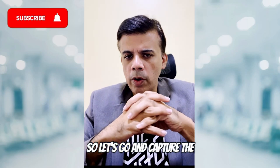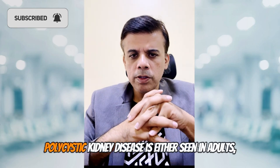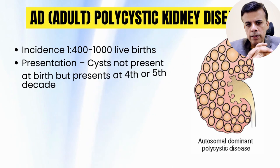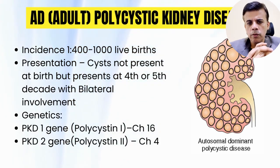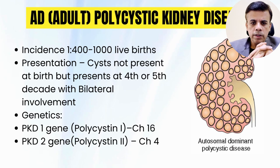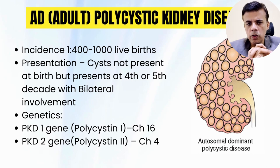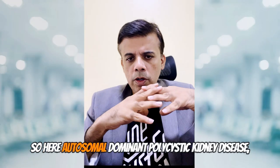Polycystic kidney disease is either seen in adults — called adult polycystic kidney disease — which is of the autosomal dominant type. An autosomal recessive type also occurs, which is rarer and generally occurs in children or even in utero.